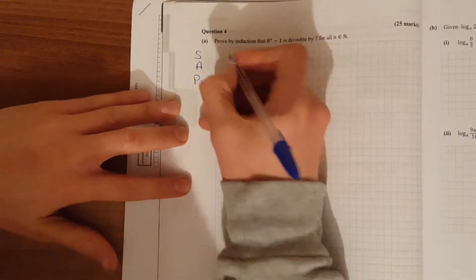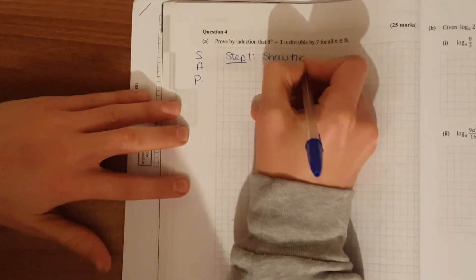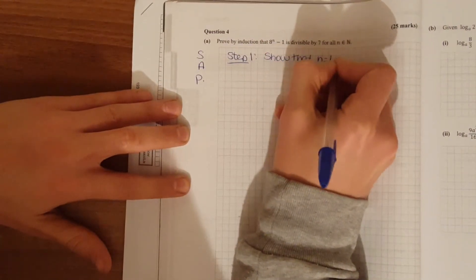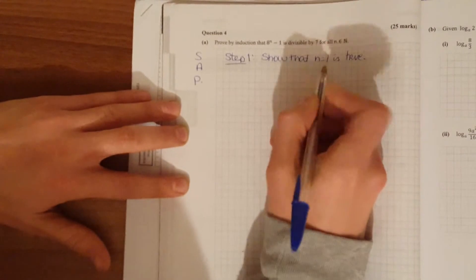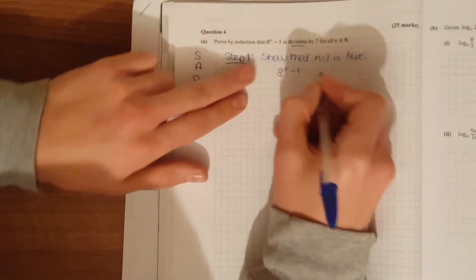So SAT, first step 1, you've got to show that n is equal to 1. It's true. What you've got to do is solve the value for 1 and for n, and it's divisible by 7.